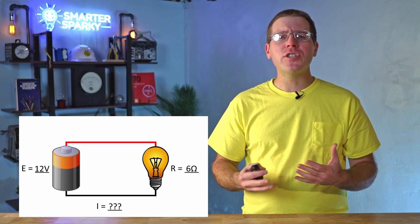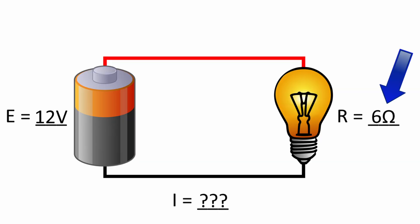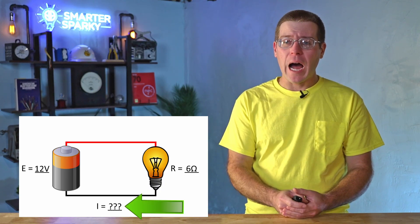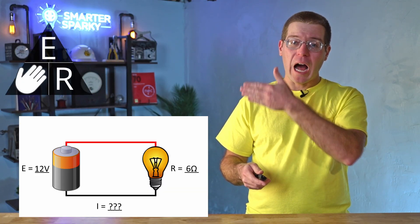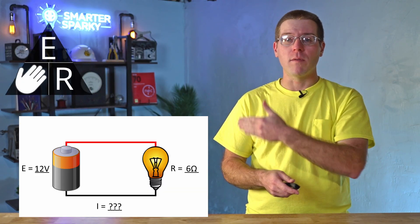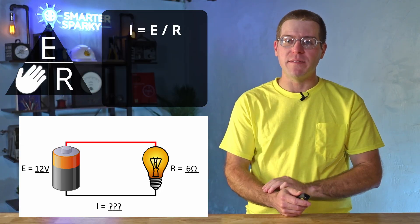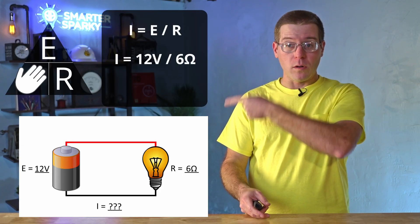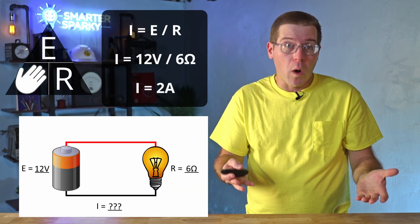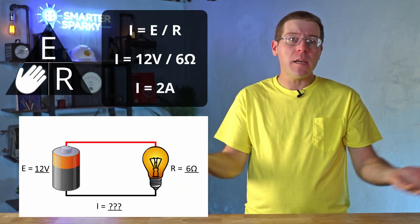Let's do a few practical Ohm's Law calculations, one for each of the three Ohm's Law equations. Consider this circuit: how much current would flow if we had a resistance of 6 ohms and a voltage of 12 volts? We need to solve for I, our placeholder for current. Grab the triangle and cover up I — that leaves E over R, meaning I equals E divided by R. Plugging the values in: I equals 12 volts divided by 6 ohms. 12 divided by 6 is 2 amps. Easy.